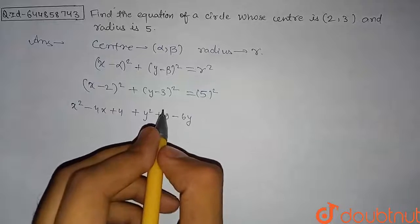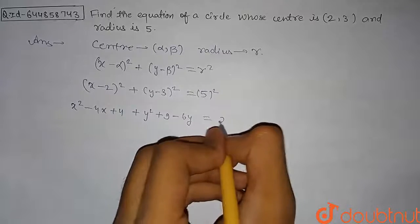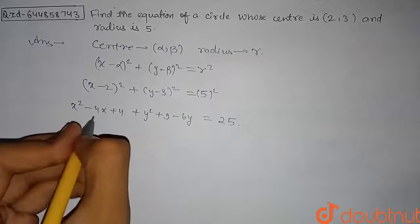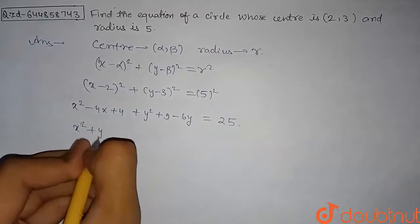So from here this will be equal to 25. So on further combining these parts we get x² here, here will be +y², here will be -4x and -6y...